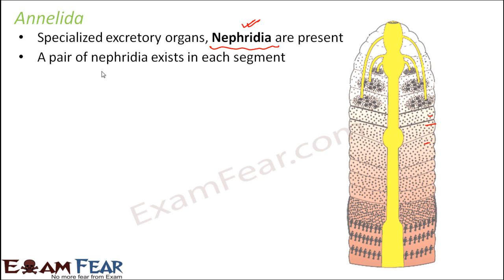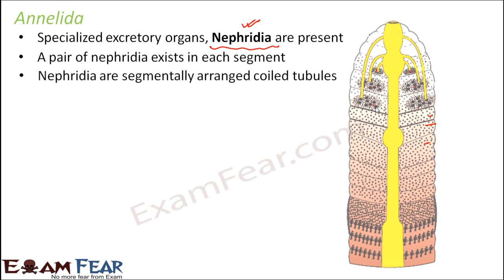All the nephridia exist in pairs, and they are segmentally arranged coiled tubules — meaning each segment has a pair of nephridia properly arranged in the form of coiled tubules. From above they might look like dotted structures, but actually they are tube-like, very coiled tube-like structures; you are just viewing from above and cannot see the tube entirely.